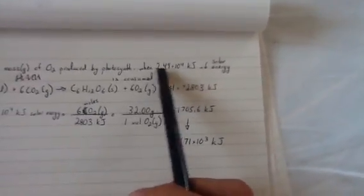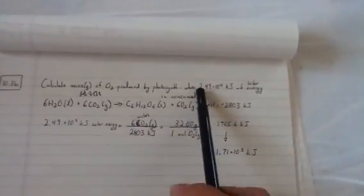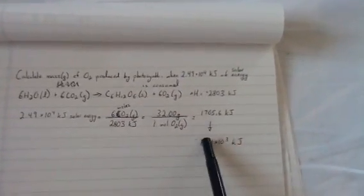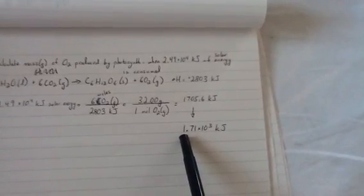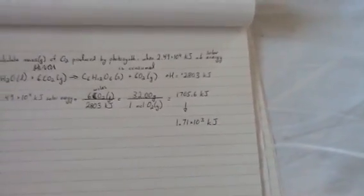But that's not quite the answer yet, because we have 3 sig figs here. In fact, if you look at all the numbers that they provide us, we have 3 sig figs. So, let's convert that to 3 sig figs, so it's 1.71 times 10 to the 3rd.